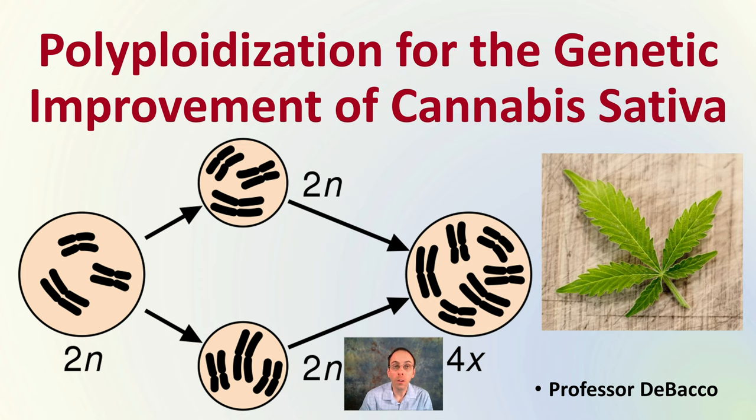Welcome to this Tobacco University. We'll be exploring a video on polyploidization for the genetic improvement of cannabis sativa, and specifically breaking down a scientific study investigating ploidy levels in cannabis sativa. We're talking about ploidy levels — keep in mind we are diploid organisms, so polyploid refers to an abnormal or increased number of chromosome copies, which we'll explain more as the video goes on.